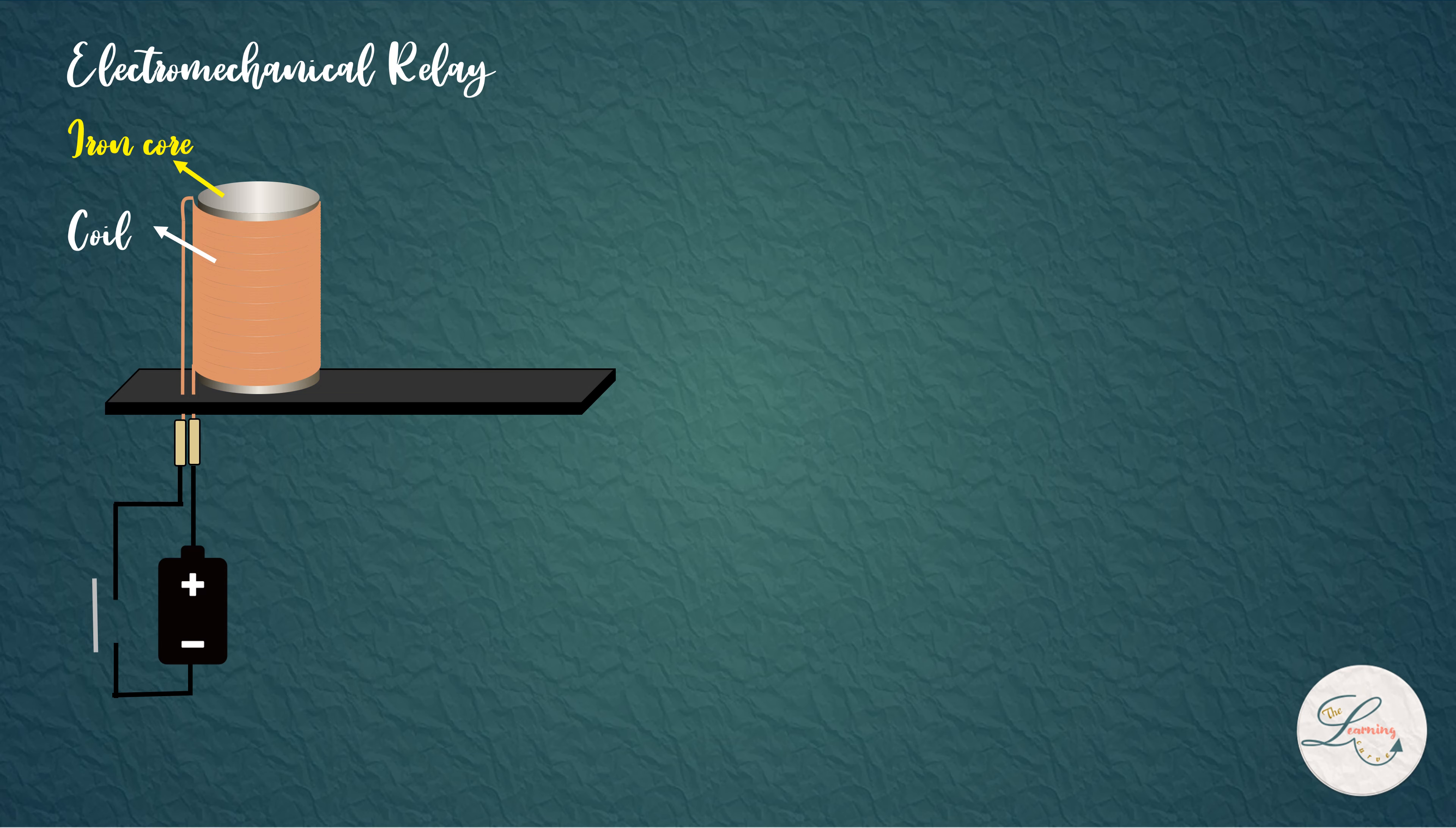A simple electromechanical relay consists of a coil of wire wrapped around a soft iron core, which acts as a magnet when current flows through it. Above the coil, a movable iron armature is present. The armature is held in place by a spring.